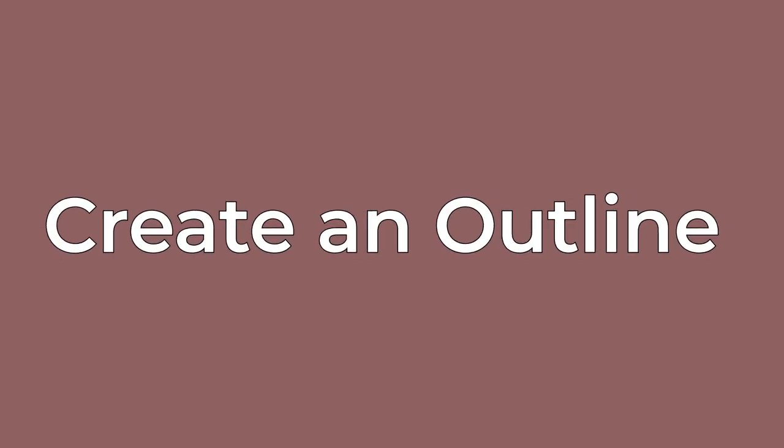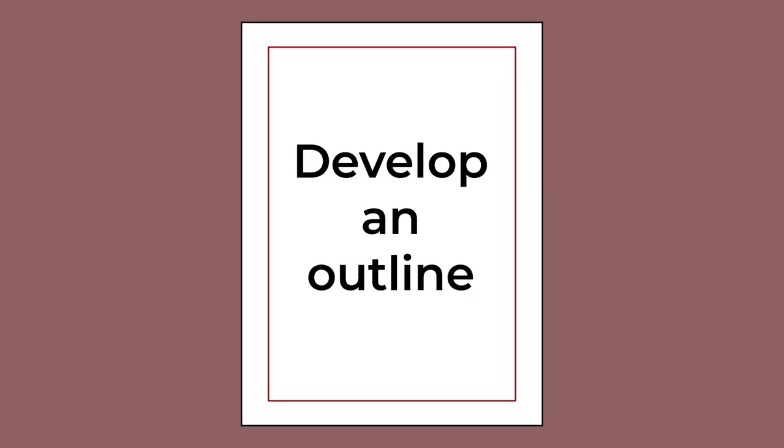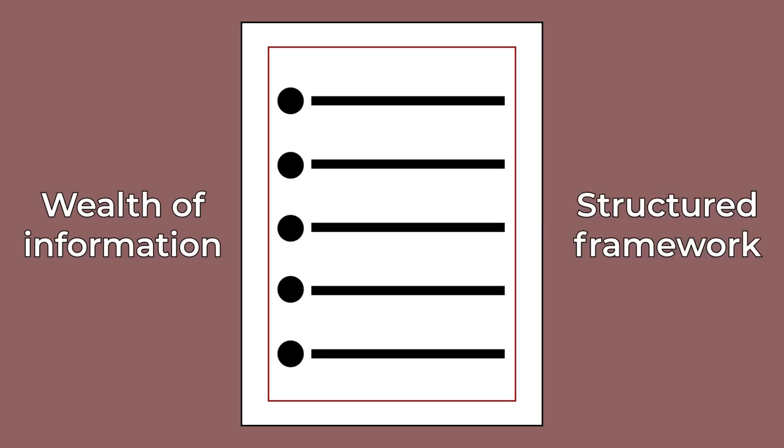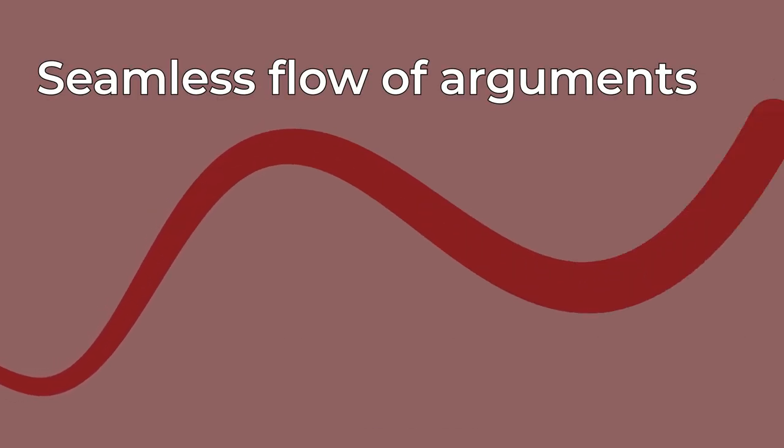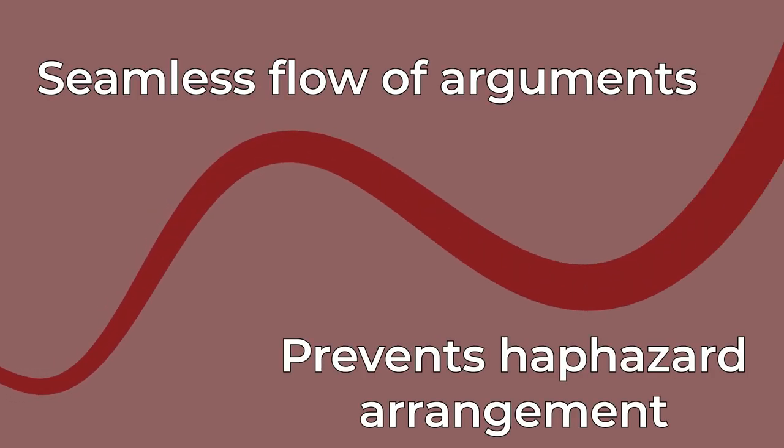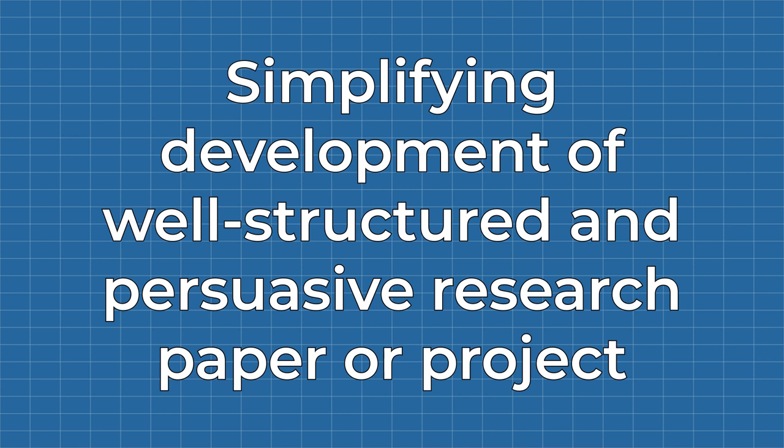Create an outline. Develop an outline for your research paper or project. Organize your ideas and evidence in a logical structure. At this stage, you transform the wealth of information you've researched into a structured framework. This structure ensures a seamless flow of arguments and prevents the haphazard arrangement of information. By defining the key points and supporting evidence, the outline acts as a blueprint, simplifying the development of a well-structured and persuasive research paper or project.